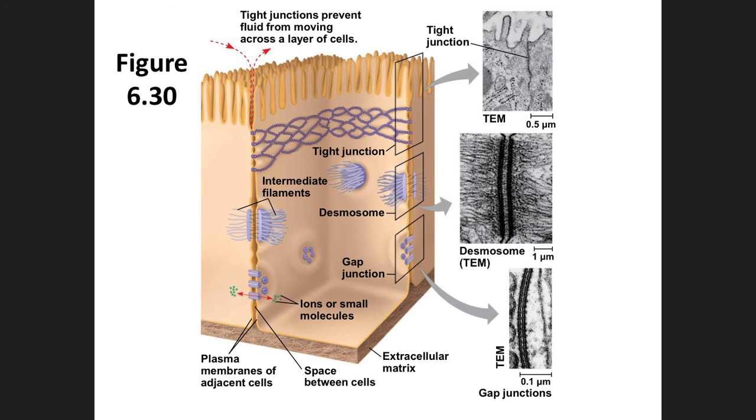This concludes my lecture on Chapter 6, A Tour of the Cell. I hope this helped you understand the different concepts in this chapter and the different parts of eukaryotic cells. If you have any questions, please write them in the comments below. If you like this video, please subscribe to my channel, and like and share this video. Thank you!